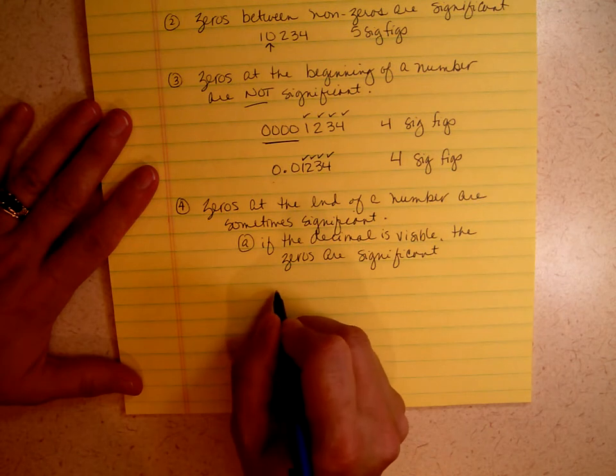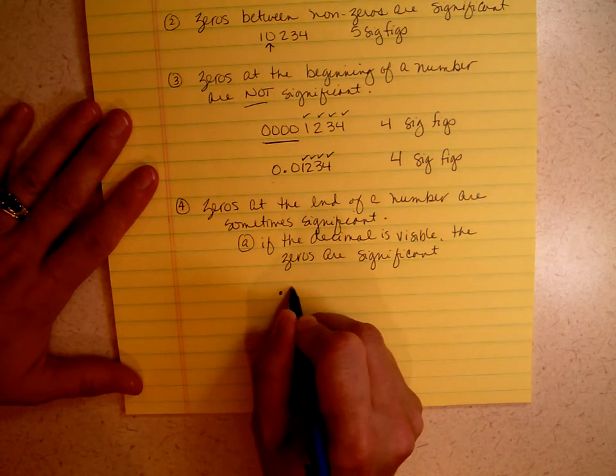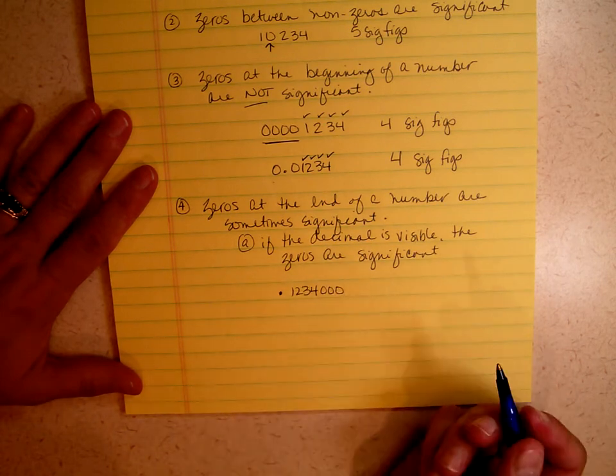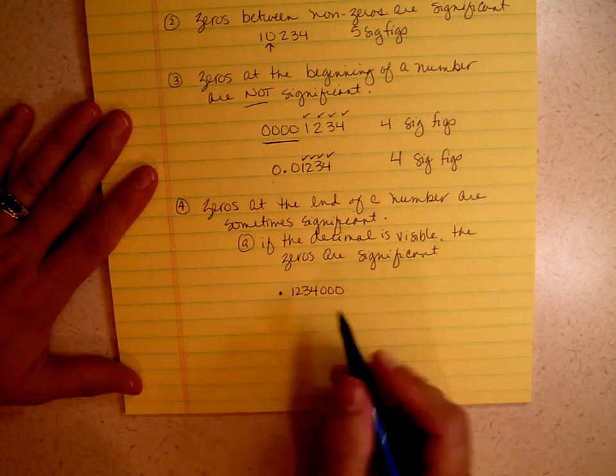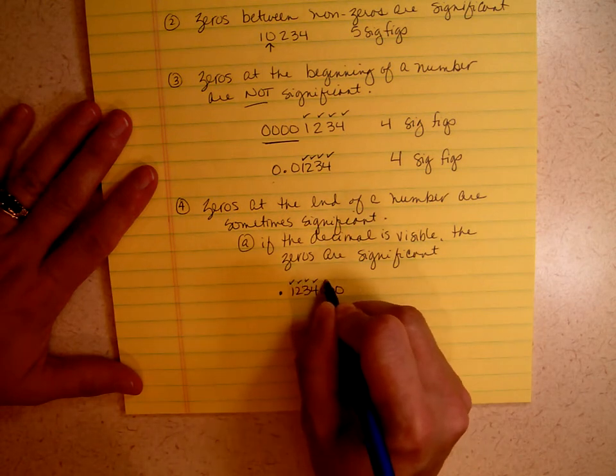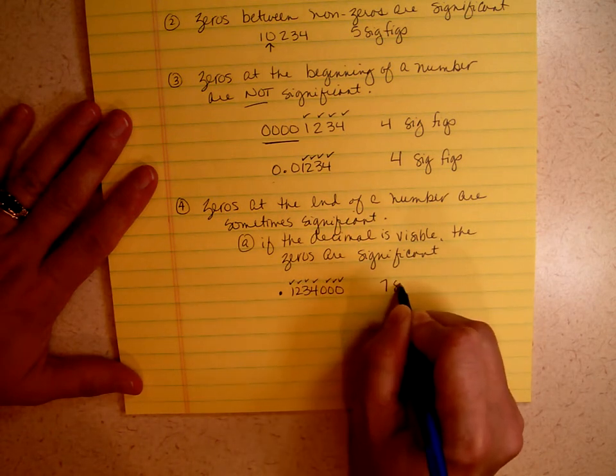So if you have 0.1234000, those zeros are at the end, the decimal is showing, they are significant. 1, 2, 3, 4, 5, 6, 7 sig figs. Does that make sense? I hope so.